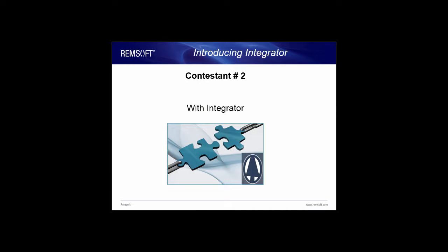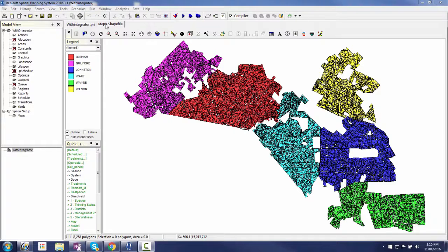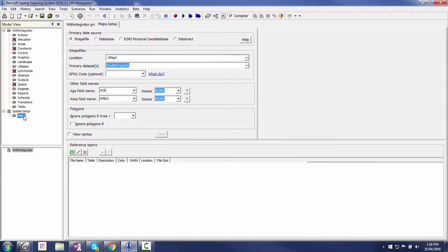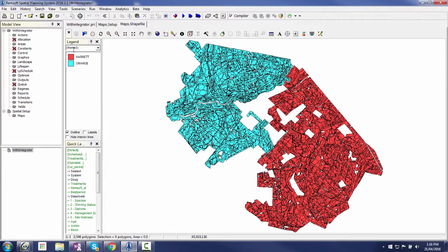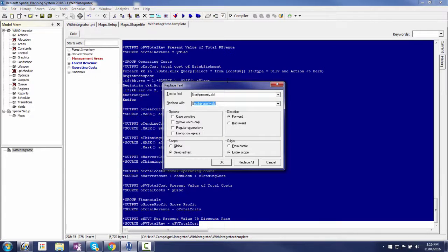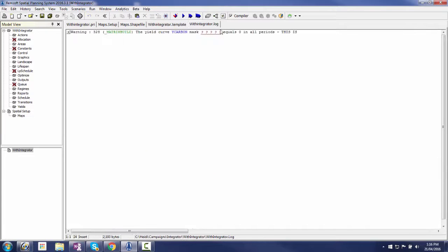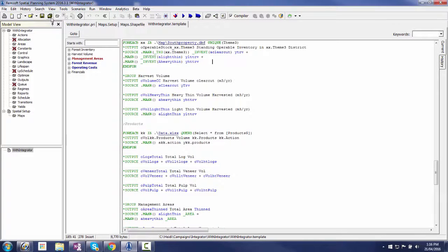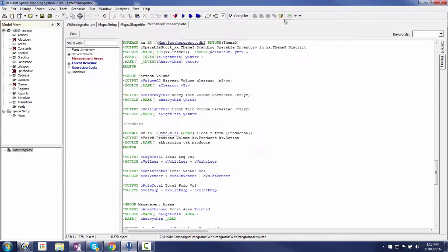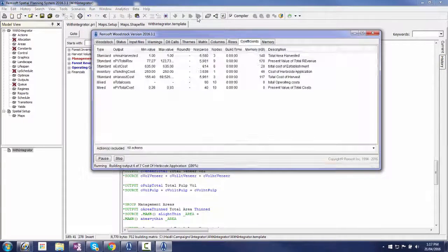Let's see how Kevin takes advantage of working from a template with integrator syntax to build a new model. He opens the spatial setup and switches from the north to the south property. He opens the template file and changes all of the integrator reference syntax from north property to south property in order for the model to connect to the new external data tables. With the new data sources linked, Kevin clicks the integrator's update button, chooses all model sections, then updates. The entire model is rebuilt in 43 seconds.